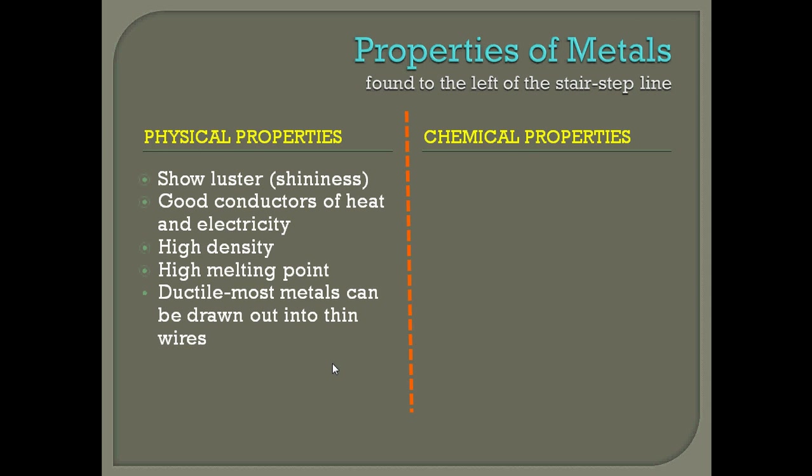Lastly, metals are going to be both ductile and malleable. This means you're going to be able to bend it, pull it, and hammer on it without it breaking. Even though they are a solid, you are able to twist it, pull it, and mold it into something without it breaking.